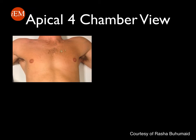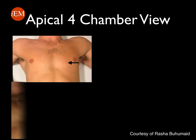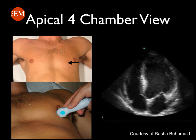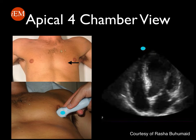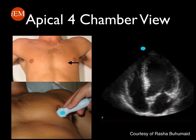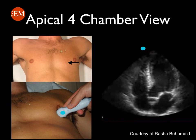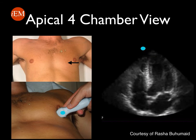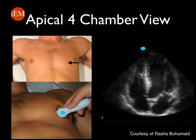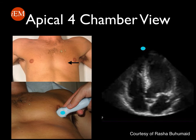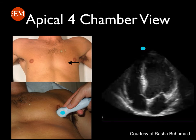An apical four-chamber view is obtained by placing the probe at the fifth intercostal space with the probe marker towards the patient's right. In men, most of the time this is just below the right nipple line. Note the bullet-shaped apex and the straight interventricular septum, which correspond to a normal and adequate apical four-chamber view.